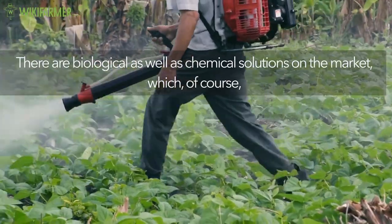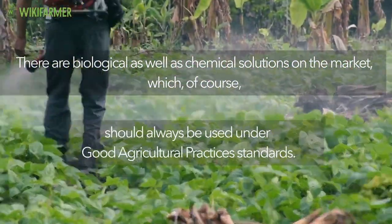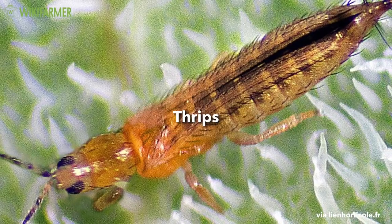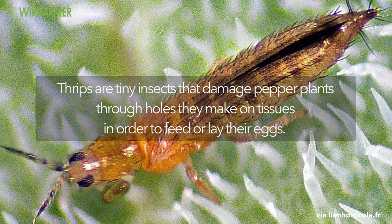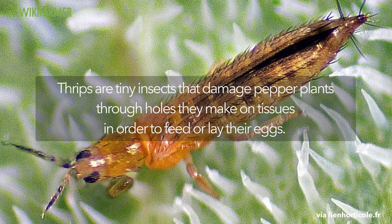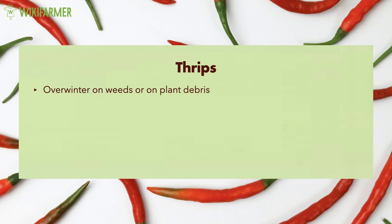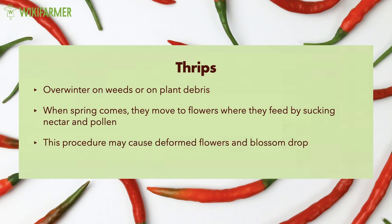There are biological as well as chemical solutions on the market, which should always be used under good agricultural practices standards. Thrips. Thrips are tiny insects that damage pepper plants through holes they make on tissues in order to feed or lay their eggs. They overwinter on weeds or on plant debris and when spring comes, they move to flowers where they feed by sucking nectar and pollen. This procedure may cause deformed flowers and blossom drop.